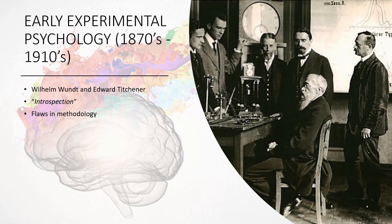Our first topic is early experimental psychology, which ranged from roughly the 1870s to the 1910s. Wilhelm Wundt and Edward Titchener — teacher and student at a university in Germany — were the first experimental psychologists. They launched a new enterprise focused on conscious thoughts, using a concept called introspection, which is basically looking within one's own mind to record the content of our own thoughts and mental processes.